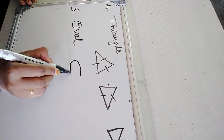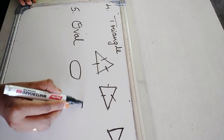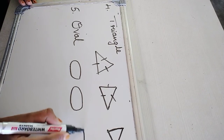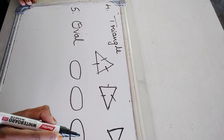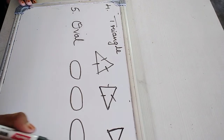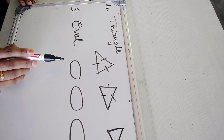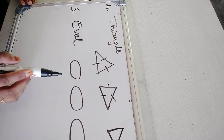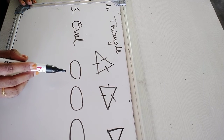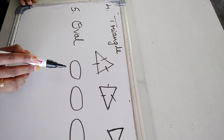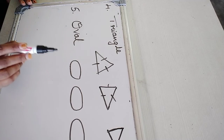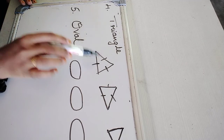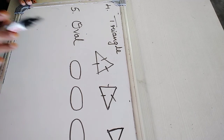Oval, oval shape. Observe carefully, students. Oval shape — the shape of an egg is like an oval. Triangle shape, oval shape.